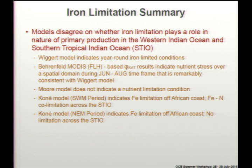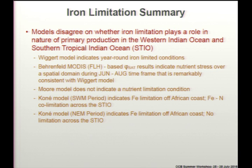The models also disagree on whether iron limitation plays a role in the Southern Tropical Indian Ocean. The Kone model picks up iron limitation off Africa and an iron-nitrogen co-limitation across the basin during the southwest monsoon, with no limitation across the Southern Tropical Indian Ocean in the winter monsoon. But in our Wigert model, there's year-round iron limitation, and the patterns line up very nicely with the MODIS satellite-based fluorescence distribution of nutrient stress.